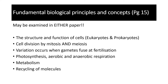Structure and function of cells — paper one. Cell division by mitosis and meiosis — paper one. Variation occurs when gametes fuse at fertilisation — paper one. Photosynthesis, aerobic and anaerobic respiration — paper one. Metabolism — paper one. And finally, recycling of molecules — paper two. So these can be in either paper.